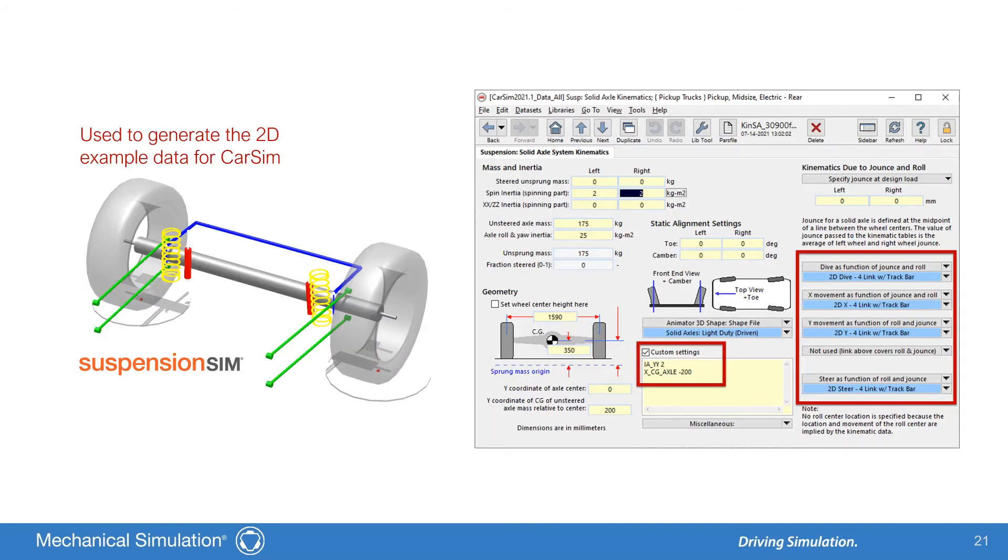To demonstrate these 2D tables, I used a SuspensionSim model to make some measurements. You can see here that we've also updated the solid axle kinematics screen to support the new 2D options. This screenshot also shows the custom settings box used for some new solid axle inertial properties. The pitch inertia, IAYY, and the longitudinal CG offset of the axle, XCG Axle. These two parameters are also new for 2021.1.